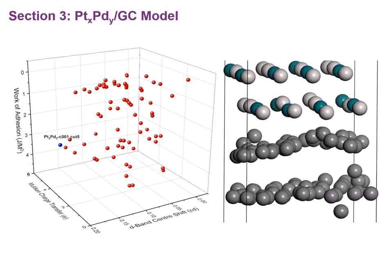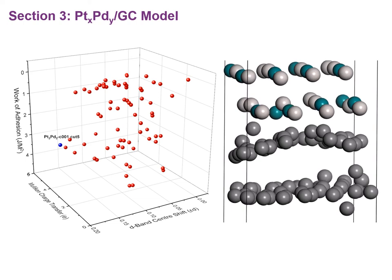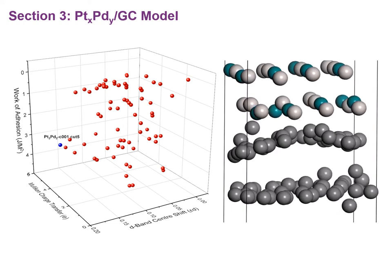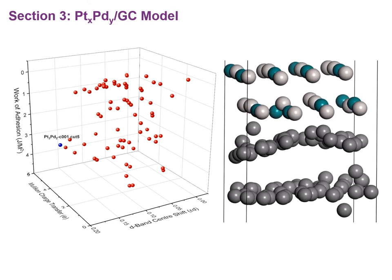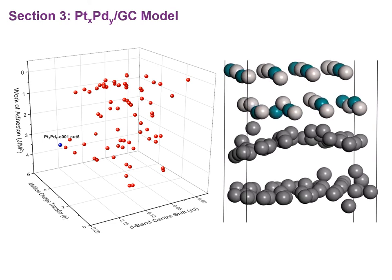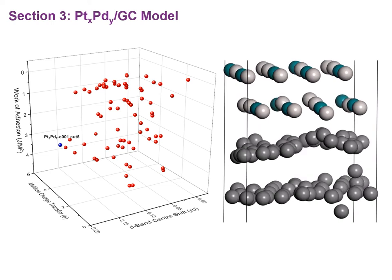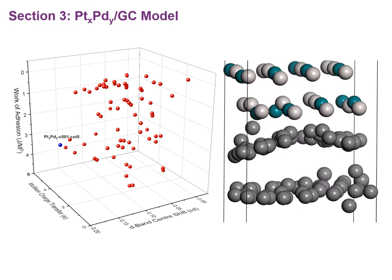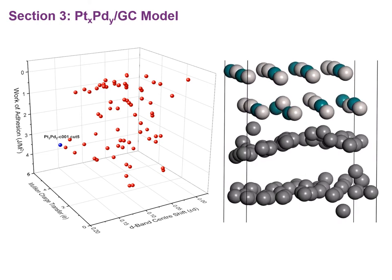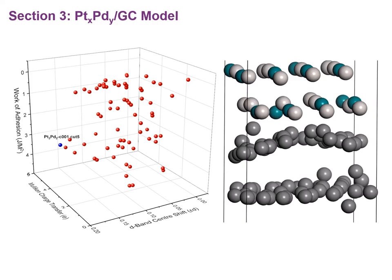Here is a short animation of the best performing interfacial model, in which we can see the steps during relaxation. As you can see, the metal atoms are actually pulled closer to the large defect in the glassy carbon at the interface. This gives us an indication that the defect in the glassy carbon is actually required for the metal bond to occur.